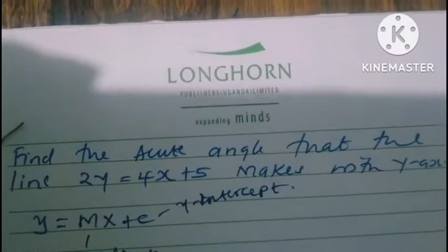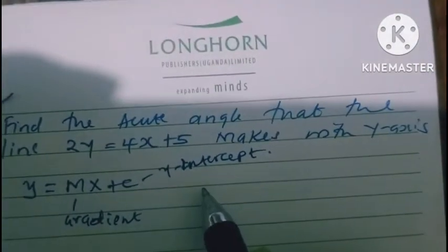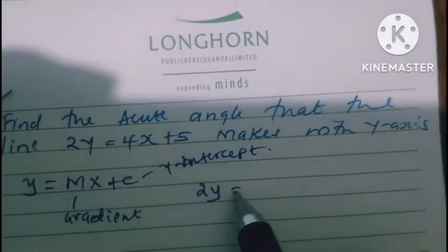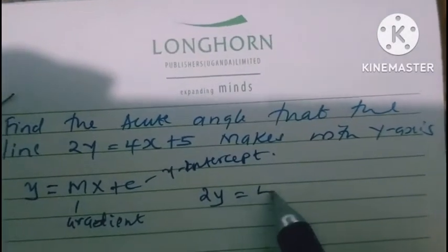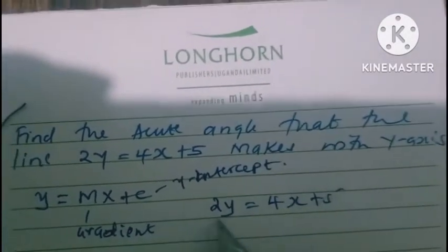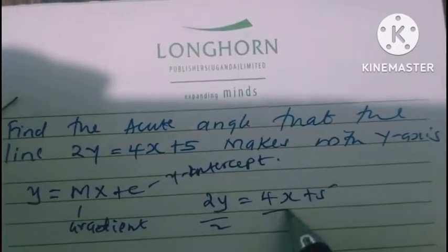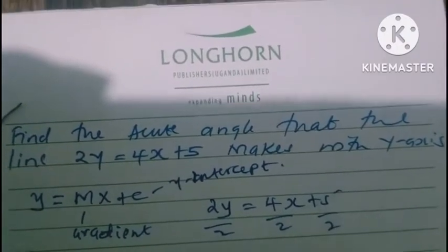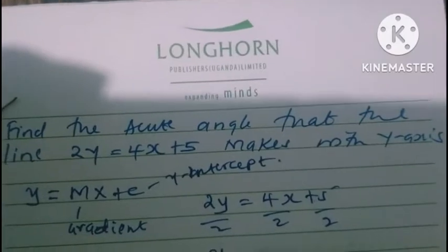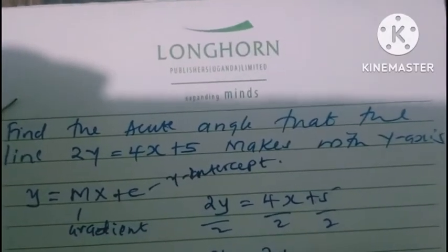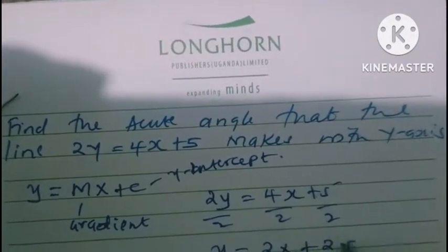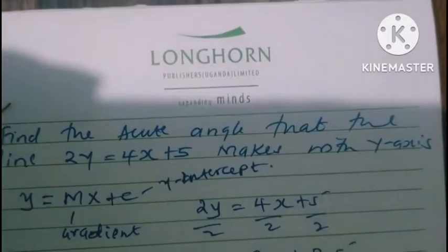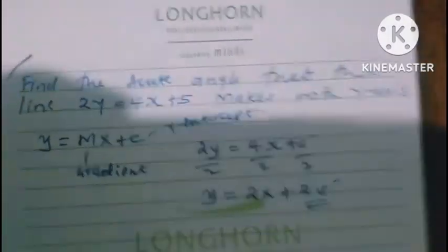Now, writing this equation in that form, we will have 2y equals 4x plus 5. We want to remain with y alone here, we divide here by 2, we divide by 2, we divide by 2, so we have y equals 2x plus 2.5. So, 2.5 here is our y-intercept.